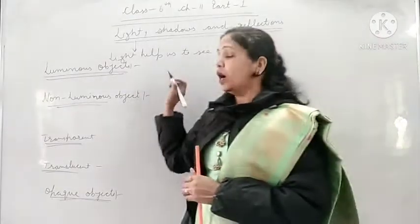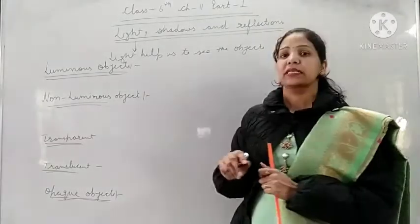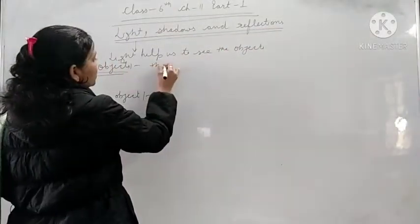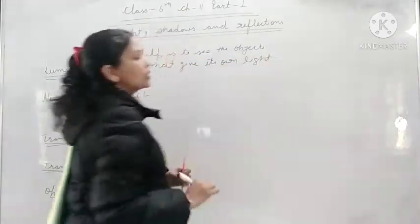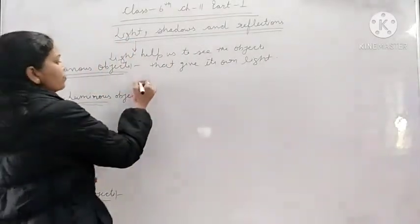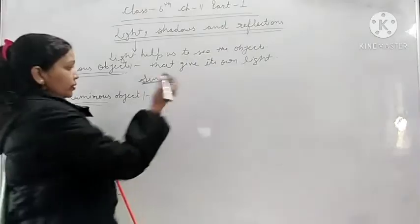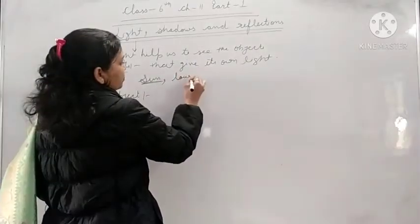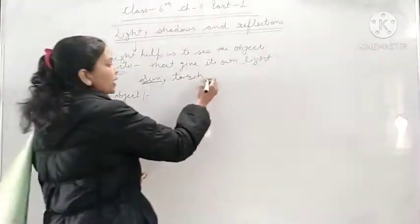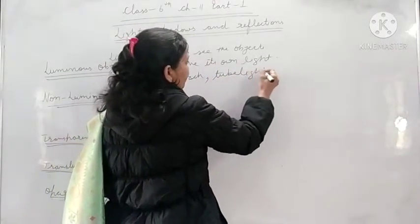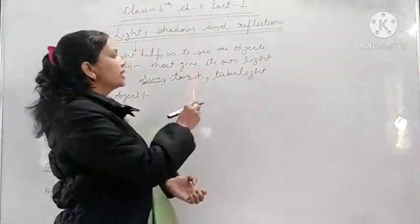The objects that give their own light are known as luminous objects. Like the sun — the sun gives its own light, so the sun is a luminous object. A torch bulb gives light, so a torch bulb is a luminous object. A tube light also gives its own light. So these are luminous objects — objects that give their own light.